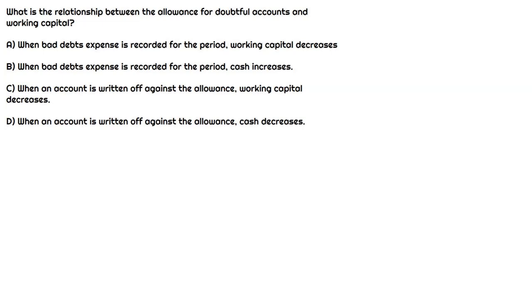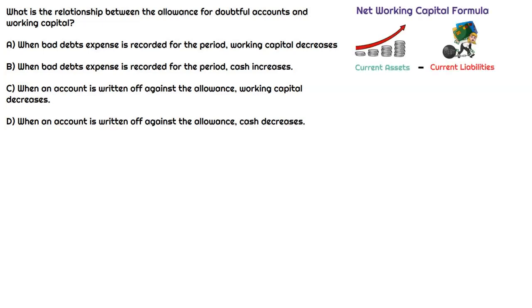This question is asking about the relationship between the Allowance for Doubtful Accounts balance and working capital. Let's take a moment and talk about each of these individually. Working capital — what is the formula? It's simple: it's just current assets minus current liabilities.